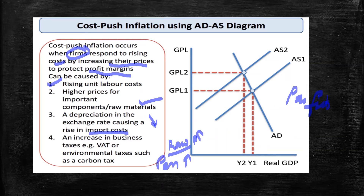There is also an increase in business taxes, which contributes to price increases and cost-push inflation. This includes import costs, environmental taxes, carbon taxes, and other business taxes — all of which drive up costs and contribute to cost-push inflation.